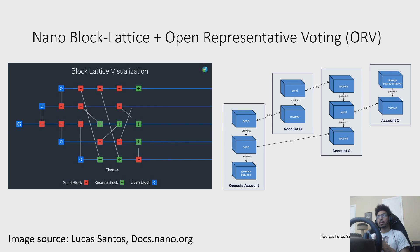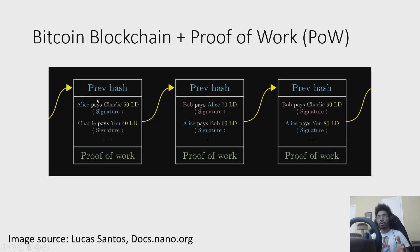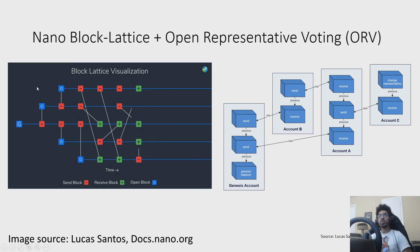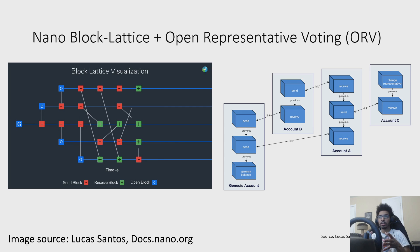So Nano is quite different. I'm going to split it into two pieces: the data structure and the consensus mechanism — but they're connected and they both influence and impact each other. So instead of one blockchain like Bitcoin — one block connected to the next block with all these individual transactions — Nano uses a block lattice. Each of these lines here is a separate account that only the owner can modify. That's one of the protocol rules — you have to sign a transaction. The only person who can sign a transaction legitimately is the one who owns the key. So each of these lines is its own account, and transactions are processed on an individual per-transaction basis, not as a block group of transactions.